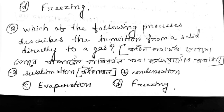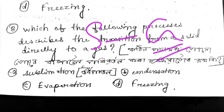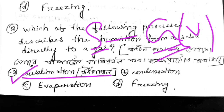Next: Which of the following processes describes the transition from a solid directly into a gas? The process of solid converting directly to vapor is called sublimation.